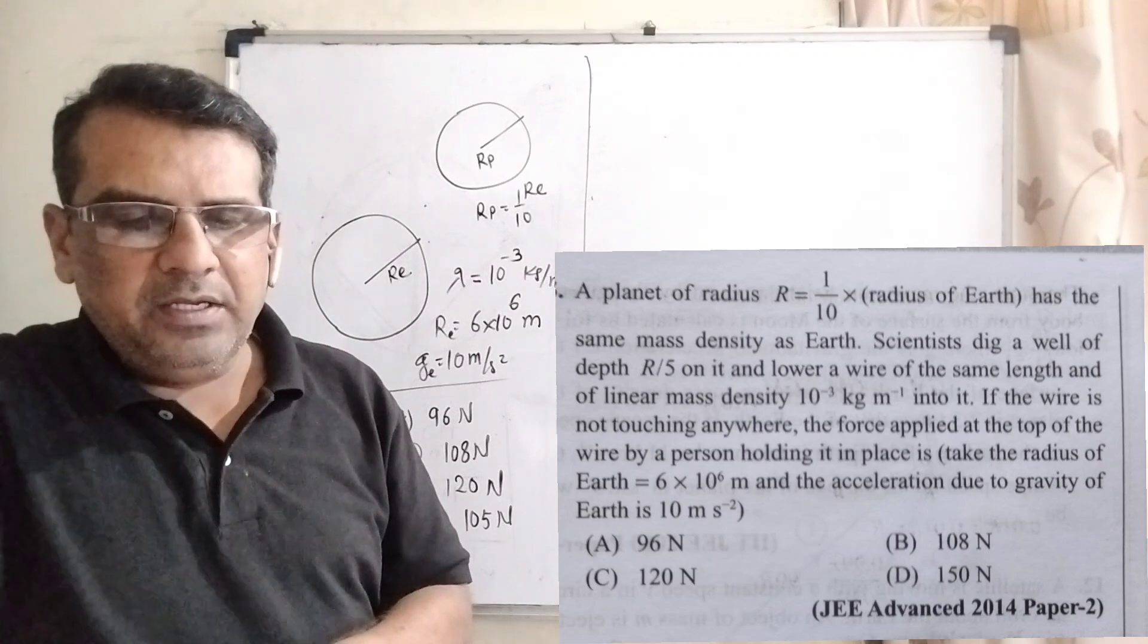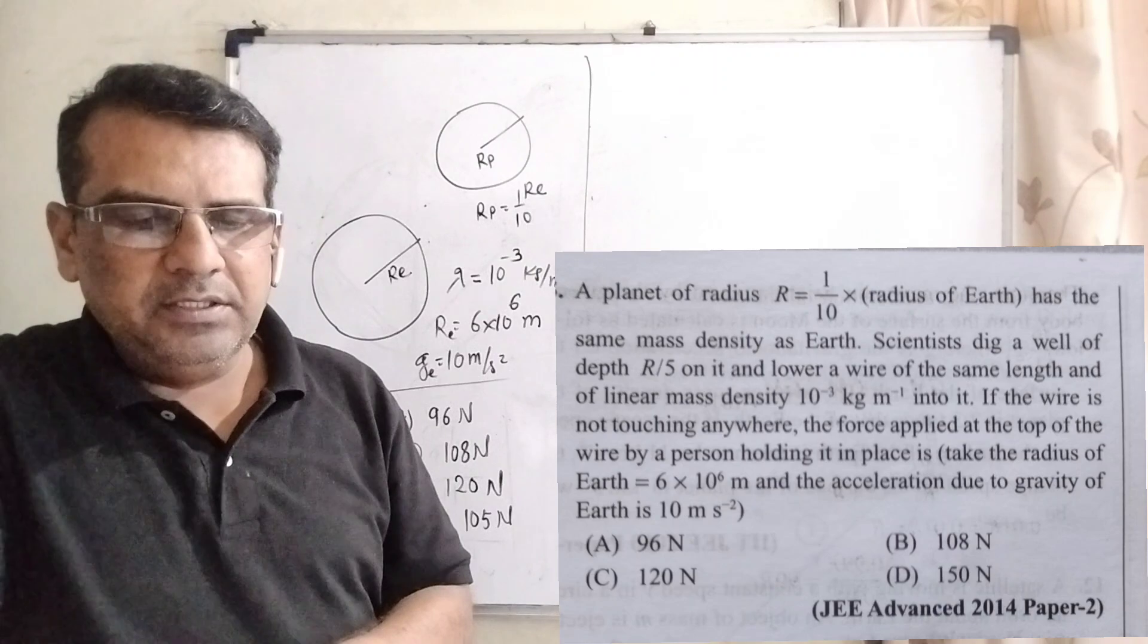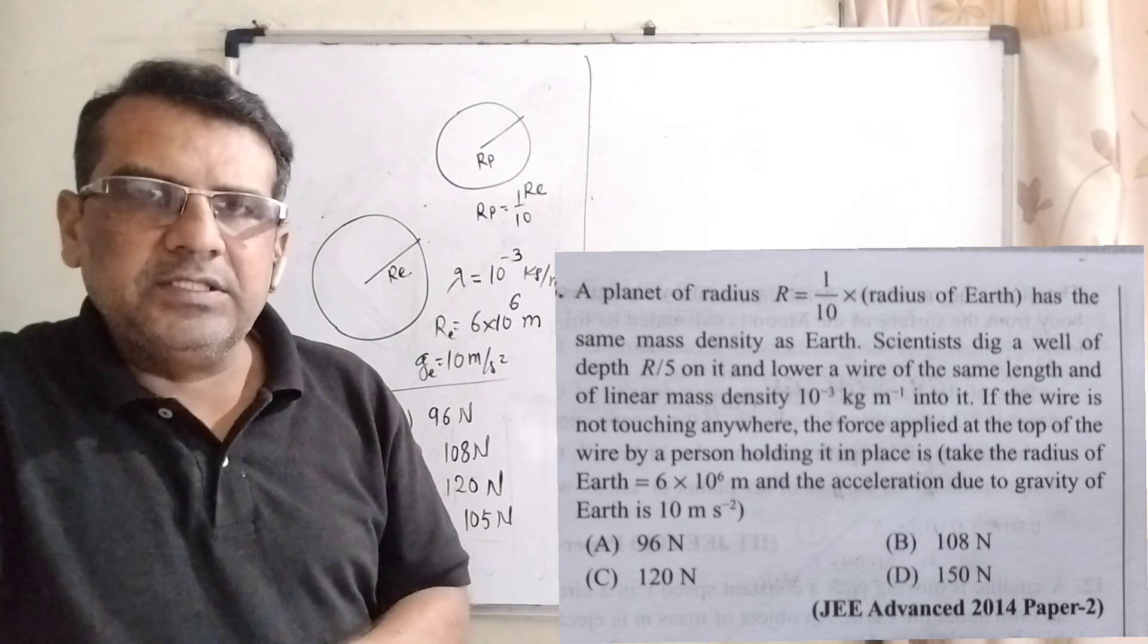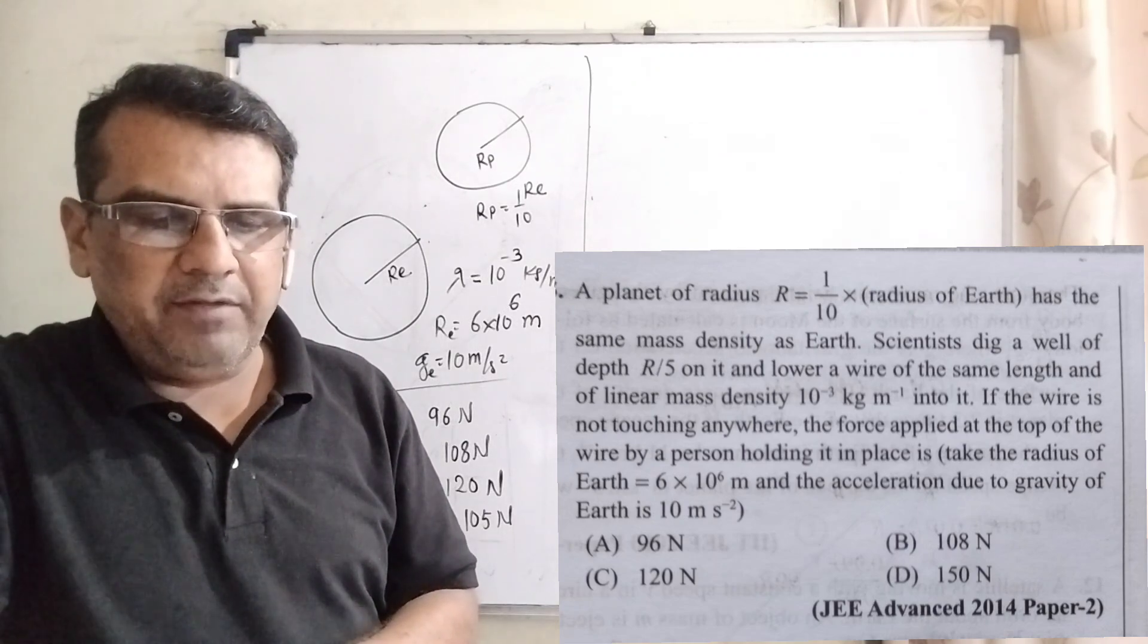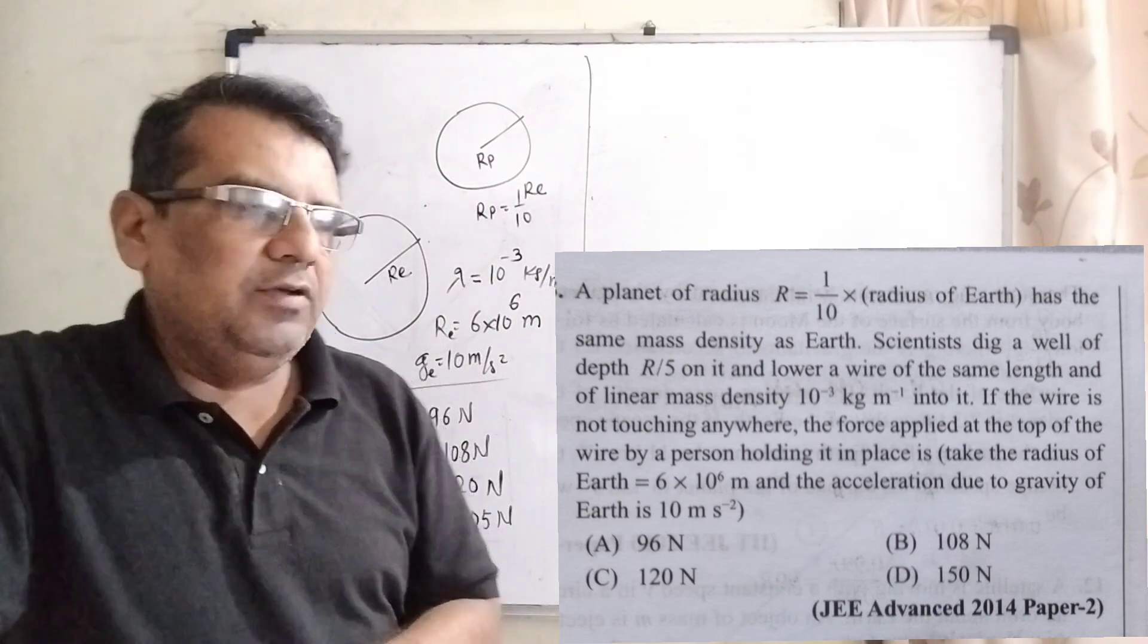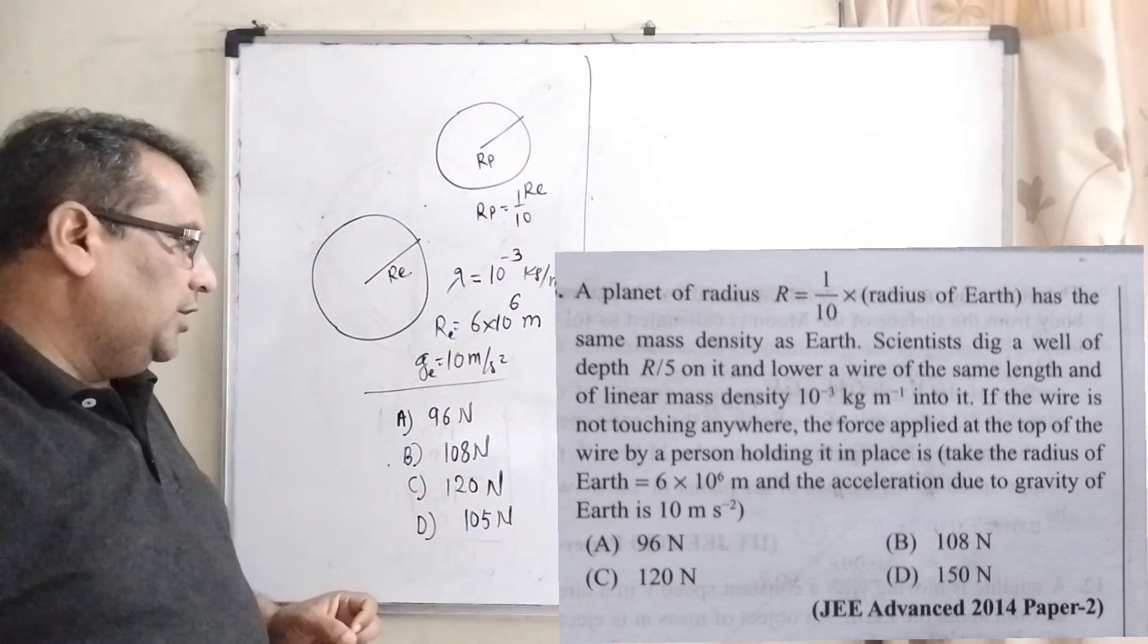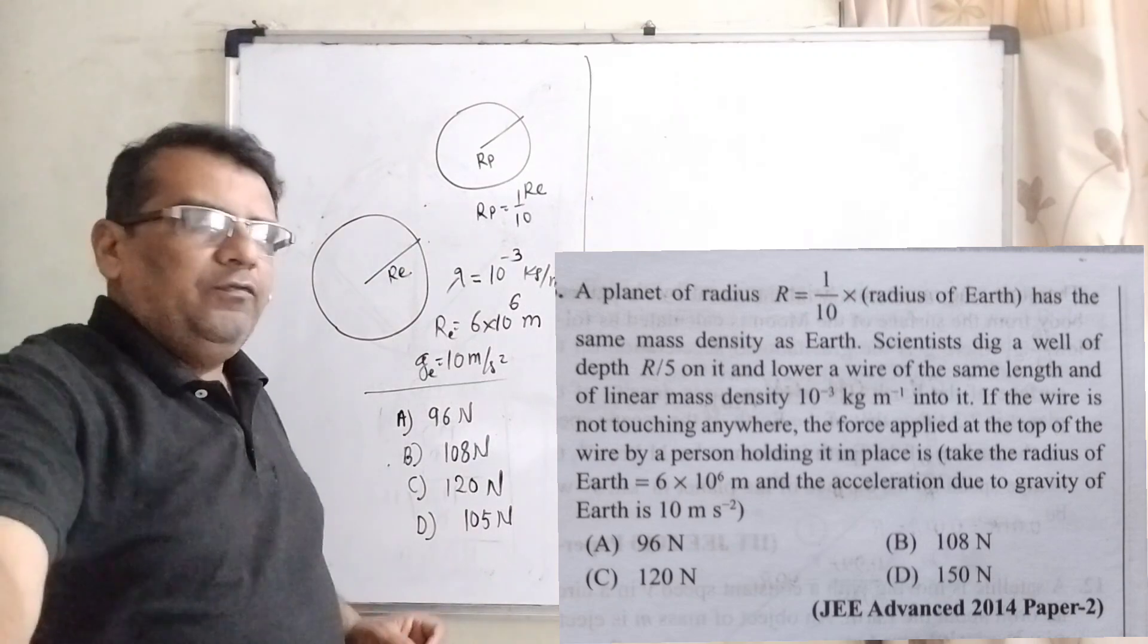The force applied at the top of the wire by a person holding it in place is, take the radius of the Earth 6 into 10 to power 6 meter and the acceleration due to gravity of Earth is taken 10 meter per second square. You have given four options: A equal to 96 Newton, B equal to 108 Newton, C equal to 120 Newton and D equal to 105 Newton.